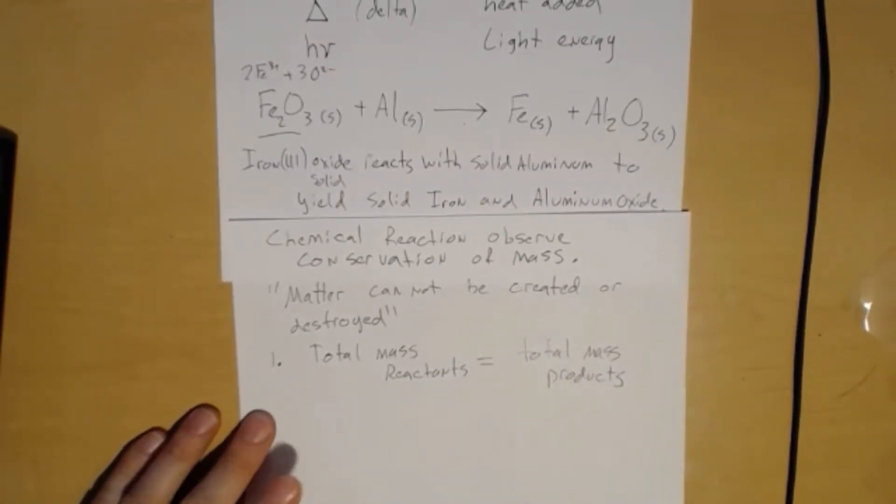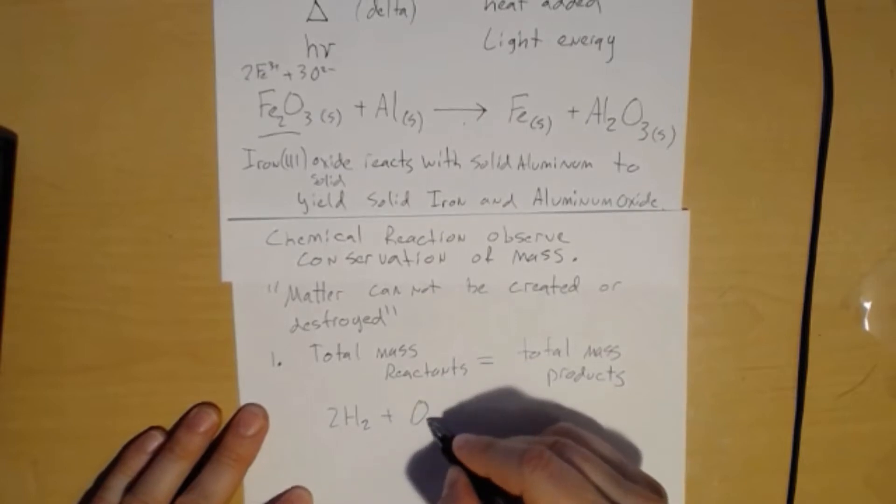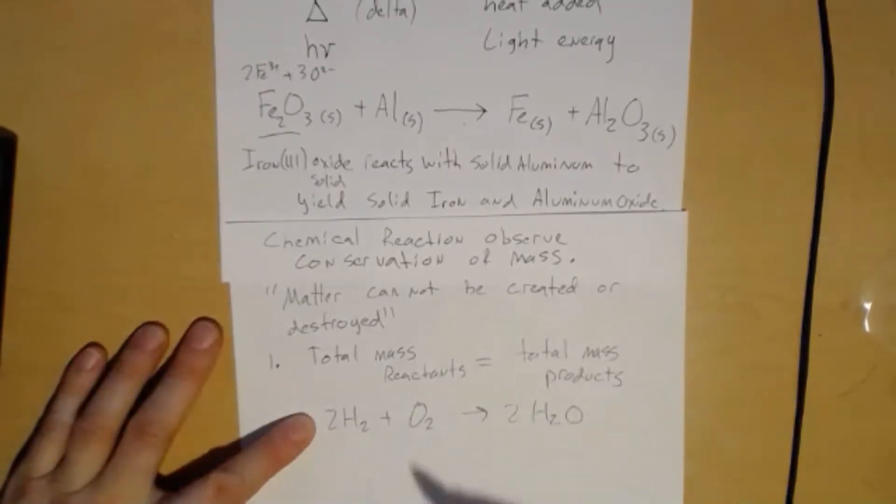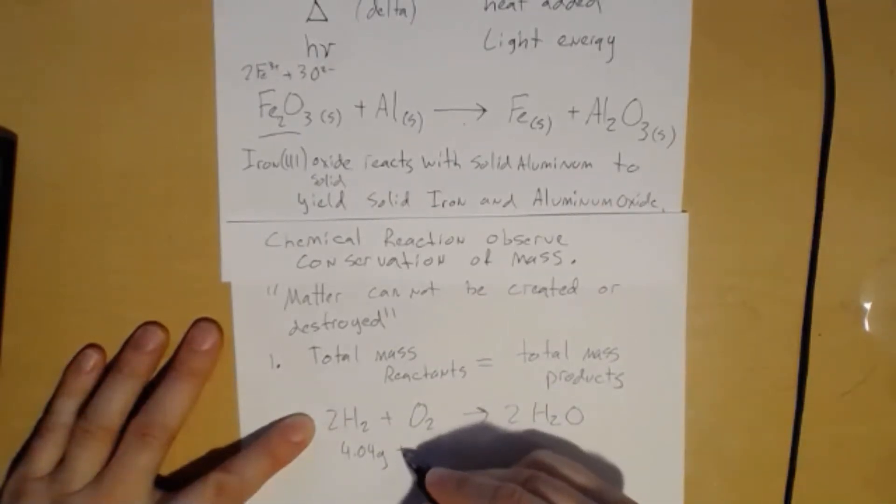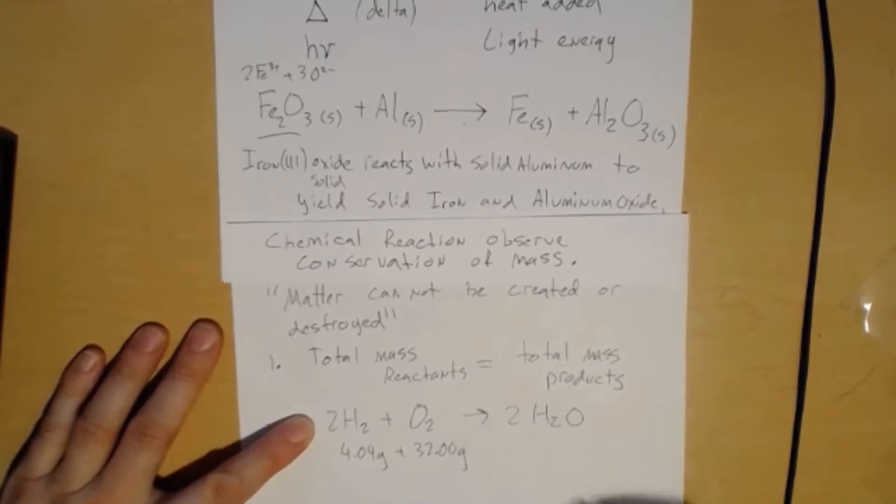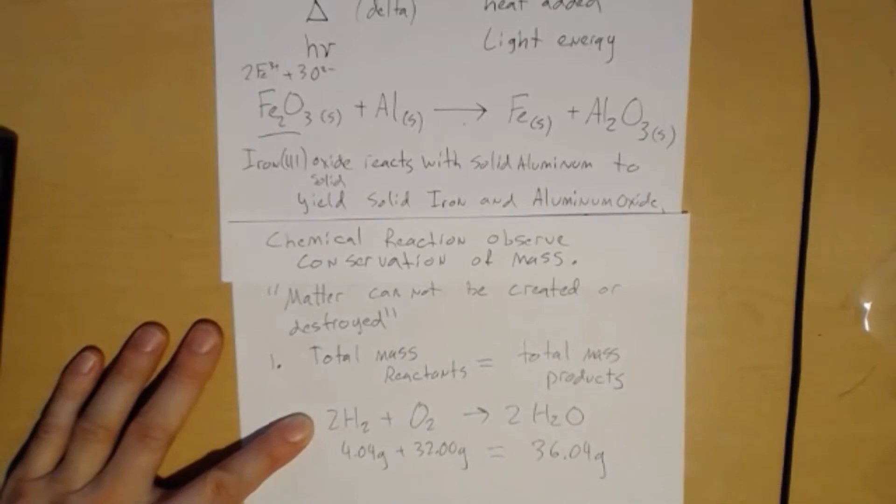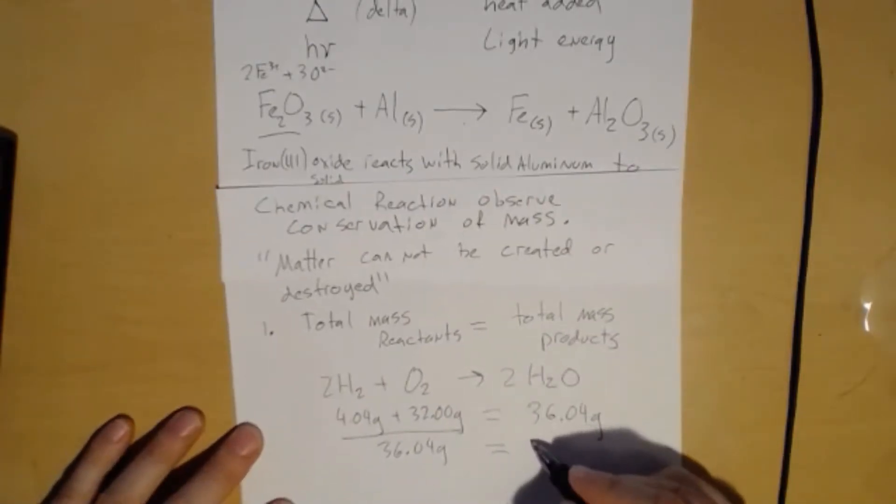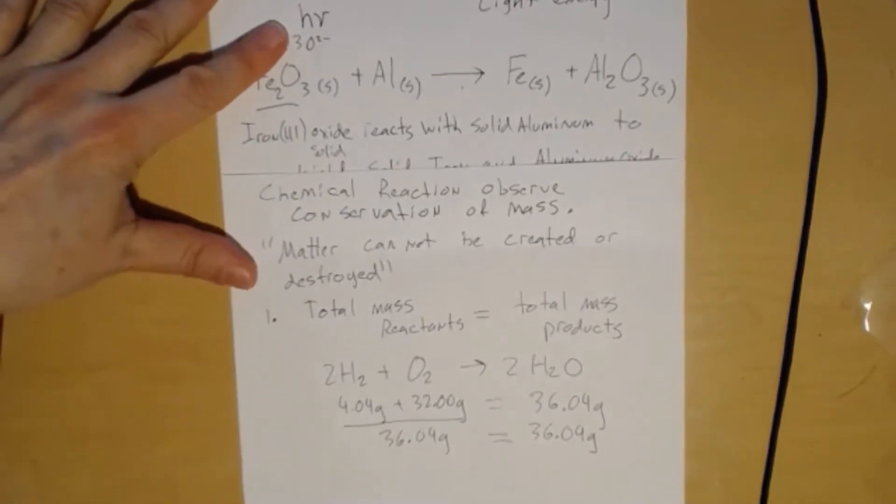All right, so let's do a balanced chemical equation. If I have two hydrogen react with one oxygen to make two water, over here I would have two times two, 4.04 grams of hydrogen, reacting with 32 grams of oxygen, and by golly, that would equal 36.04 grams of water, right? So this total here, 36.04 grams, has to equal this amount here, 36.04 grams.